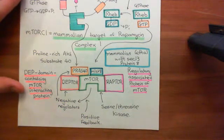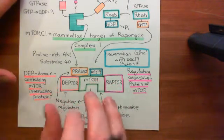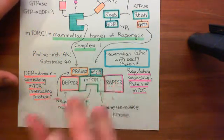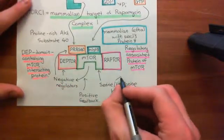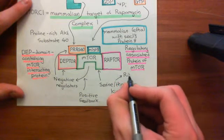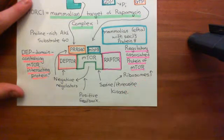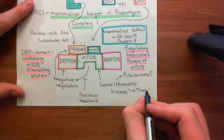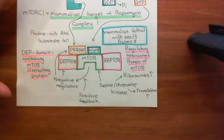That's the main way that protein kinase B activates mTORC1. This incredible serine-threonine kinase then goes off and activates translational machinery. For instance, it causes an increase in the number of ribosomes that the cell produces — so the number of ribosomes goes up. In addition, the existing translational machinery becomes activated, so you can translate more mRNA into proteins.